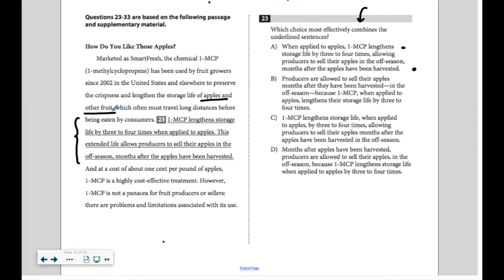I also noticed that because we've talked about lengthening storage life in that sentence, I might be able to get rid of this extended life a lot. I might be able to get rid of that because it would be redundant if I was combining the sentences. So that's one way we can shorten things.